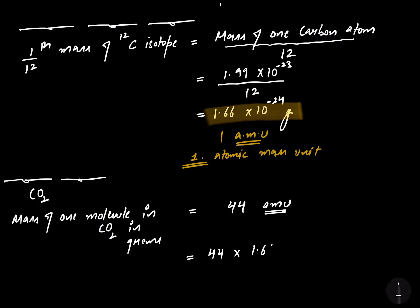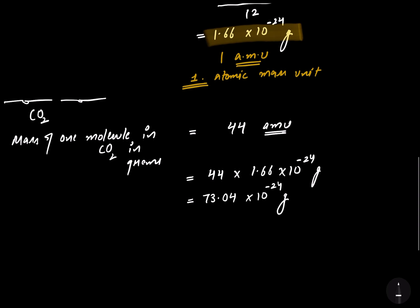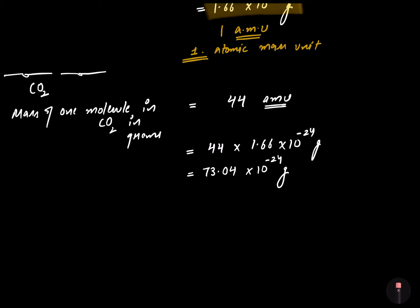So, the mass of one molecule of CO2 comes out to be 44 multiplied by 1.66 into 10 to the power minus 24 grams, which equals 73.04 into 10 to the power minus 24 grams. That is the actual weight of one molecule of CO2 in grams. I am now done with the relative molecular mass topic.